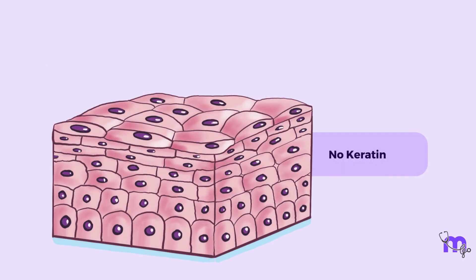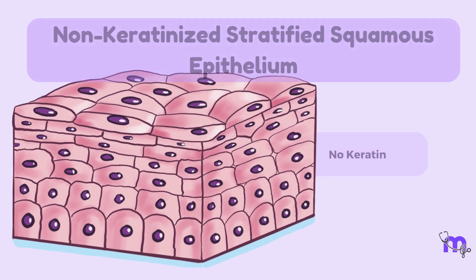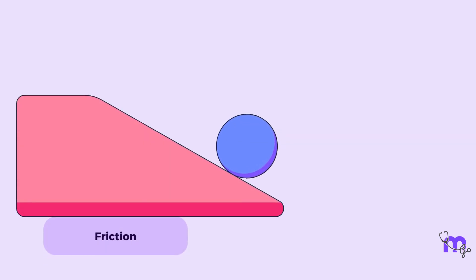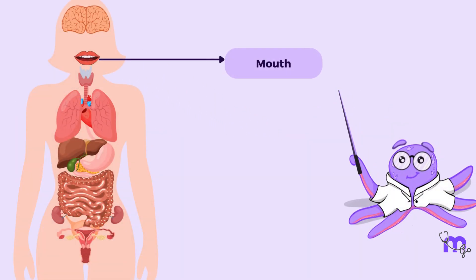When keratin is absent, it is called a non-keratinized stratified squamous epithelium where the most superficial cells are living and a thin, flat nucleus is present in its center. This epithelium is seen in areas that are subjected to friction and yet need to remain moist like the inner lining of the mouth, esophagus and vagina.